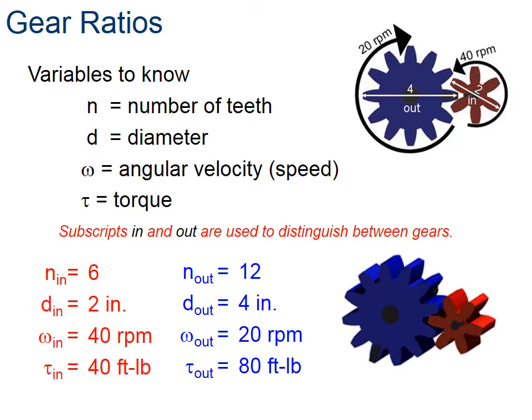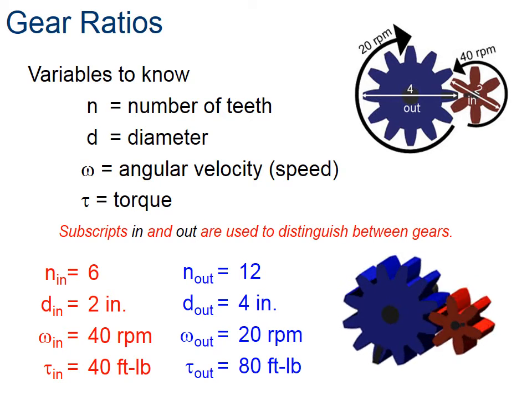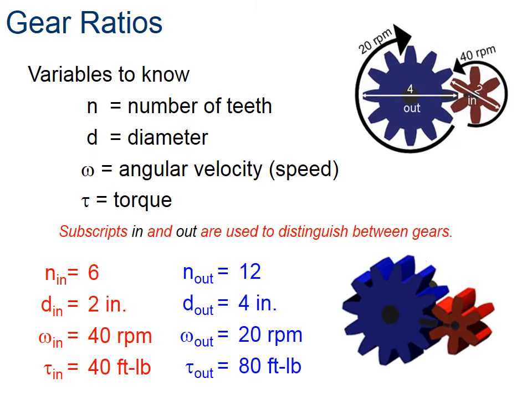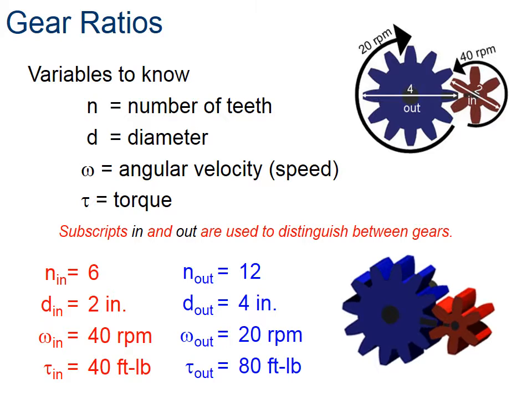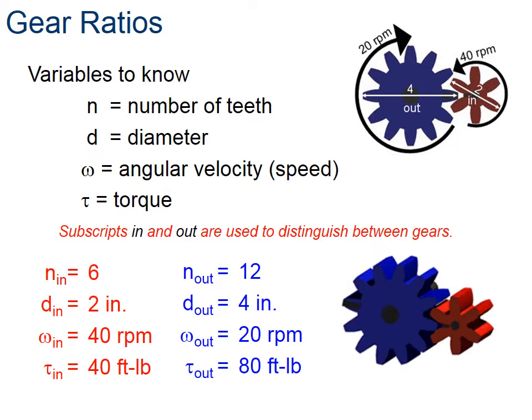So let's take a look at gear ratios. A gear ratio is analogous in rotating things like gears, sprockets, and pulleys to mechanical advantage. We need to know and define some variables first. Here you see them: N is the number of teeth, D is the diameter with a length. That's actually the Greek letter omega, which is the angular velocity or speed, or as I mentioned on the previous slide, the revolutions per minute.